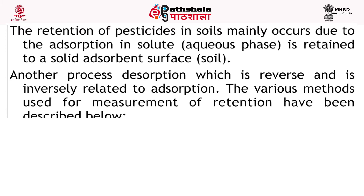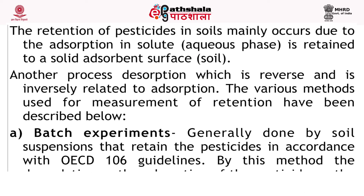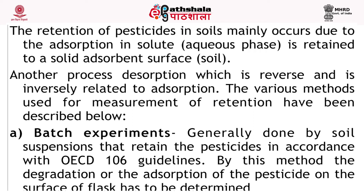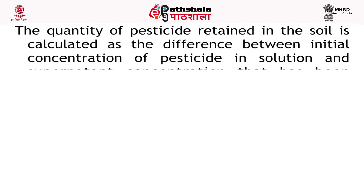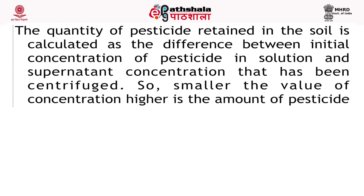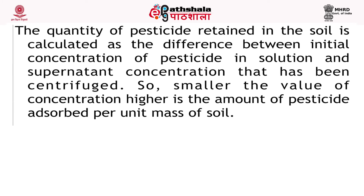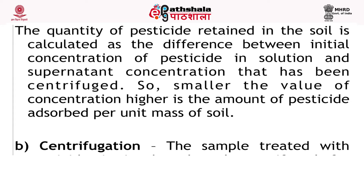The various methods used for measurement of retention are described below. First are batch experiments, generally done by soil suspensions that retain the pesticides in accordance with OECD 106 guidelines. By this method, the degradation or adsorption of pesticide on the surface of the flask has to be determined. The quantity of pesticide retained in the soil is calculated as the difference between the initial concentration of pesticide in the solution and the supernatant concentration after centrifugation. However, this process has a drawback as dispersion of soil structures occurs due to intensive shaking, causing higher adsorption site availability leading to overestimation of pesticide adsorption.